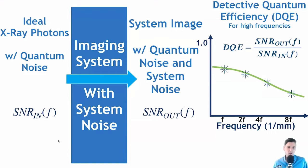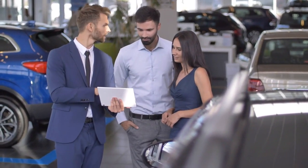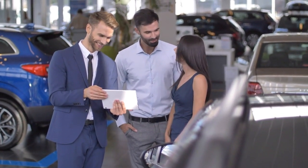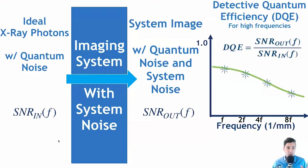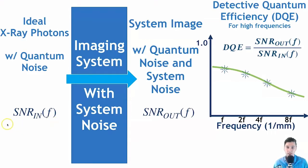For the detective quantum efficiency, we first want to consider its purpose. Using an analogy: if you go to auto dealers and say you have one gallon of gasoline, the dealers can tell you how far each car can run. Similarly, given some initial set of ideal photons that have quantum noise but are otherwise ideal — x-rays that have gone through the patient but not yet through the detector — we want to know the signal-to-noise ratio coming in, which is a function of the spatial frequency in the object.